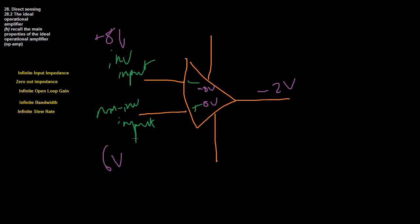That's what inverting and non-inverting means. If I made the inverting input negative 8 volts instead, it would become positive 8 volts, and positive 8 plus 6 would be positive 14 volts. So the inverting input takes whatever voltage is coming in, changes the sign — multiplies by negative 1 — and adds it. Basically you get the difference between the two values, because you're essentially subtracting the inverting input from the non-inverting input to get the resultant output.